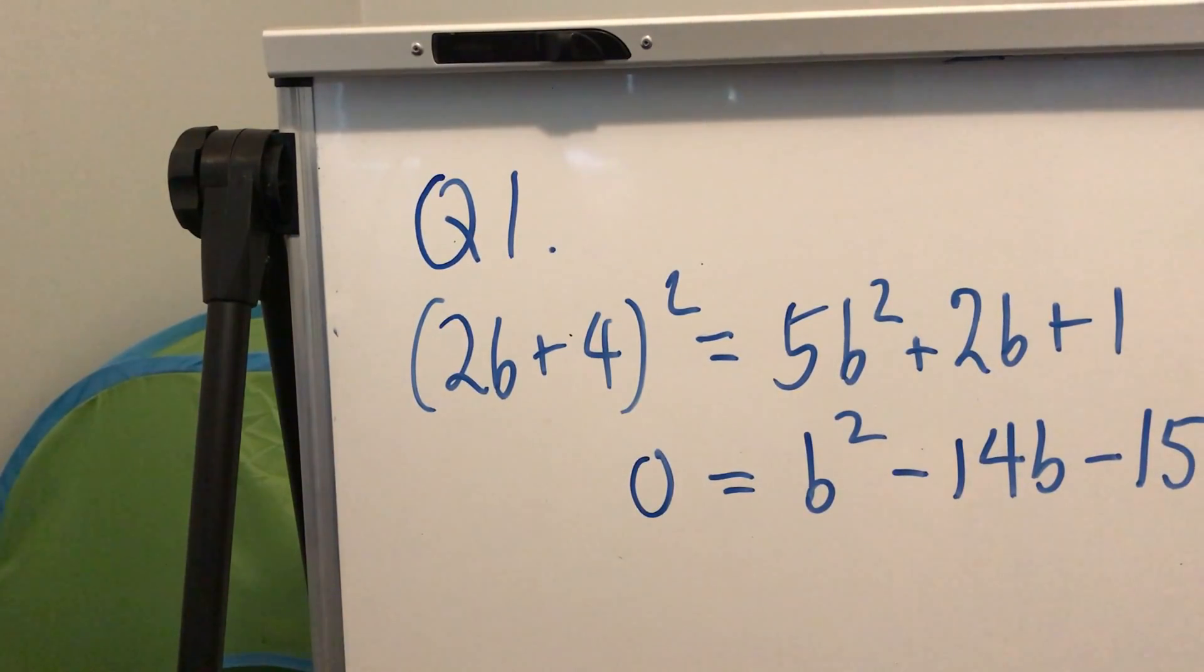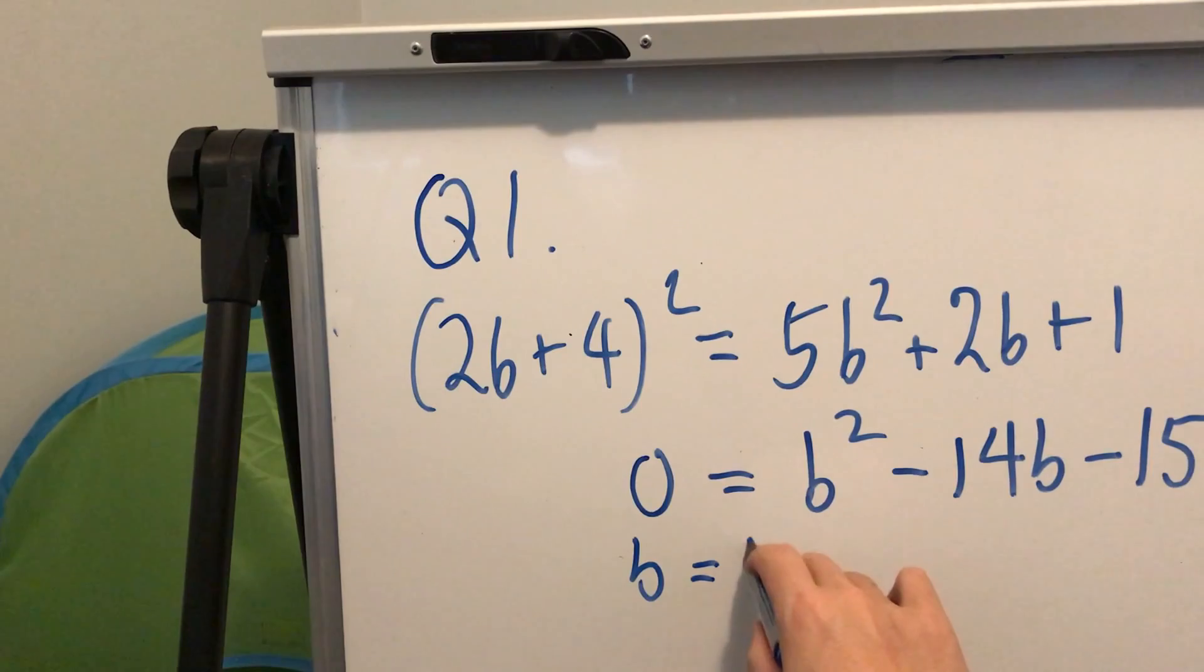So then B is either 15 or minus 1, and so it has to be 15. That's nice.